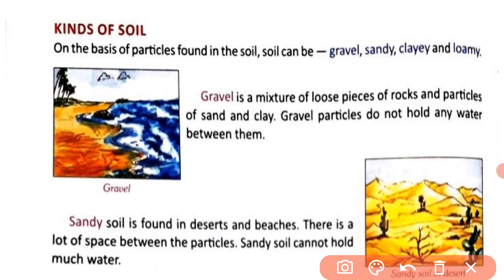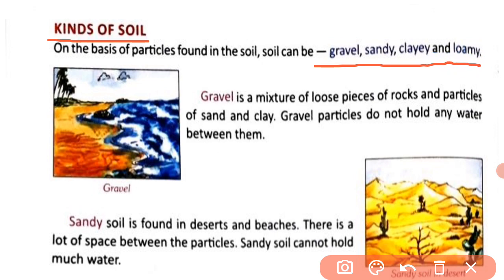Our next topic is kinds of soil. On the basis of particles found in the soil, soil can be gravel, sandy, clay, and loamy. Soil different types ke hoti hai — it can be of 4 kinds. These are gravel, sandy, clay, and loamy soil. Let us learn about these soils.